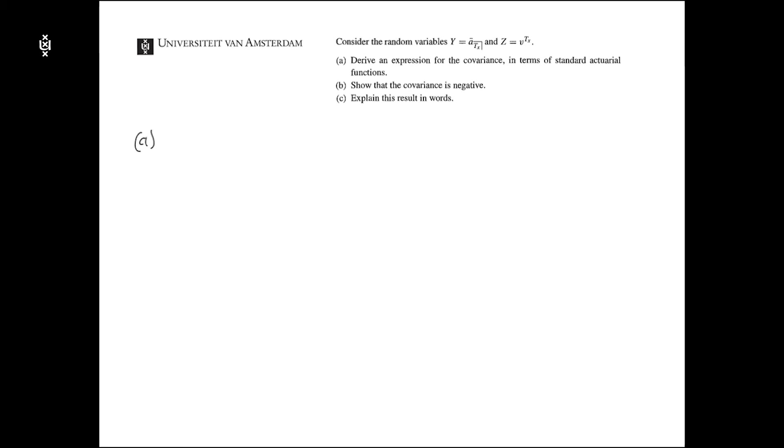Starting with that, let us recall what the covariance is of two random variables. The covariance of y and z is equal to the expectation of the product minus the product of the expectations.